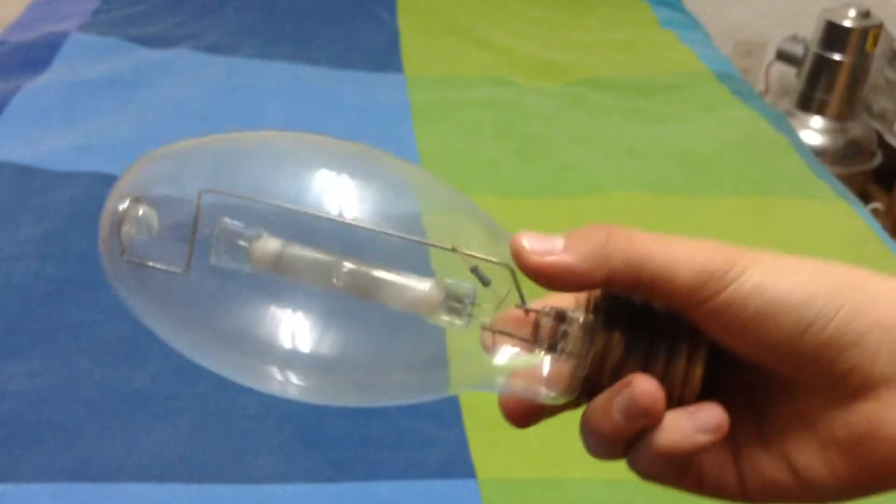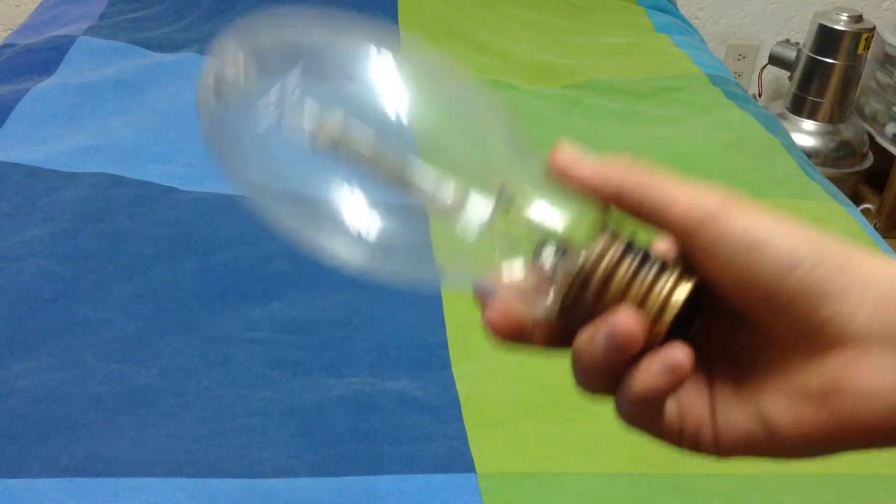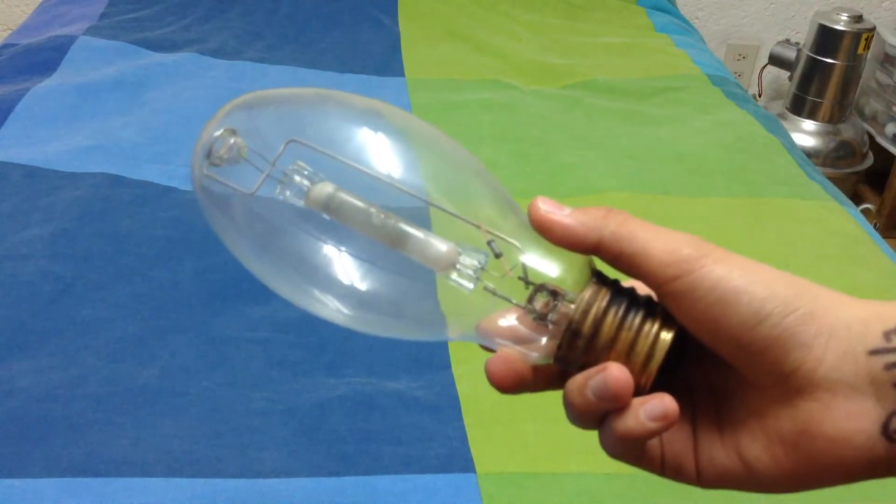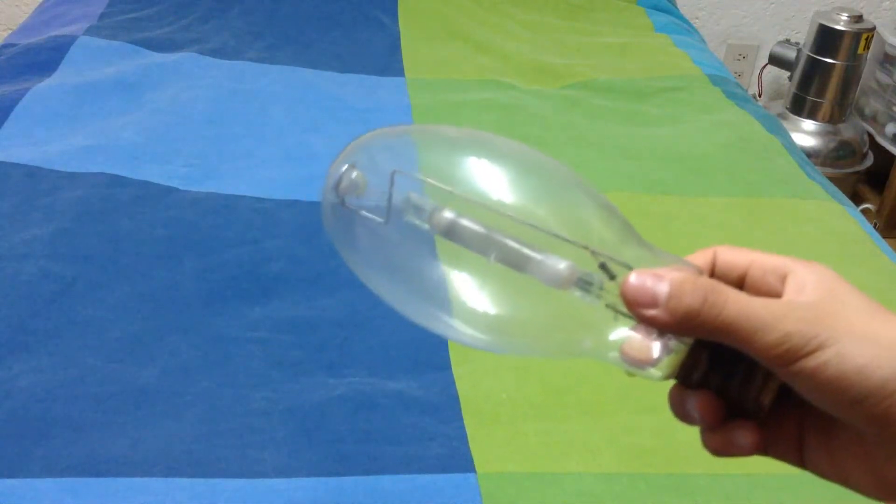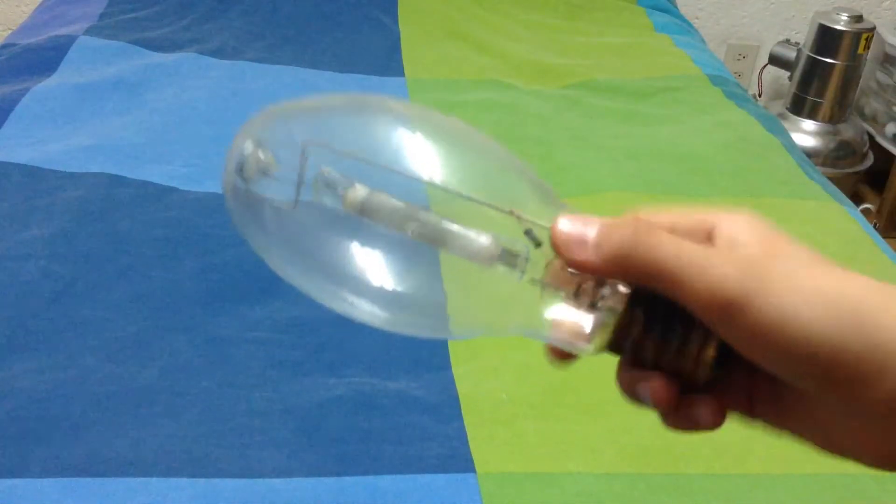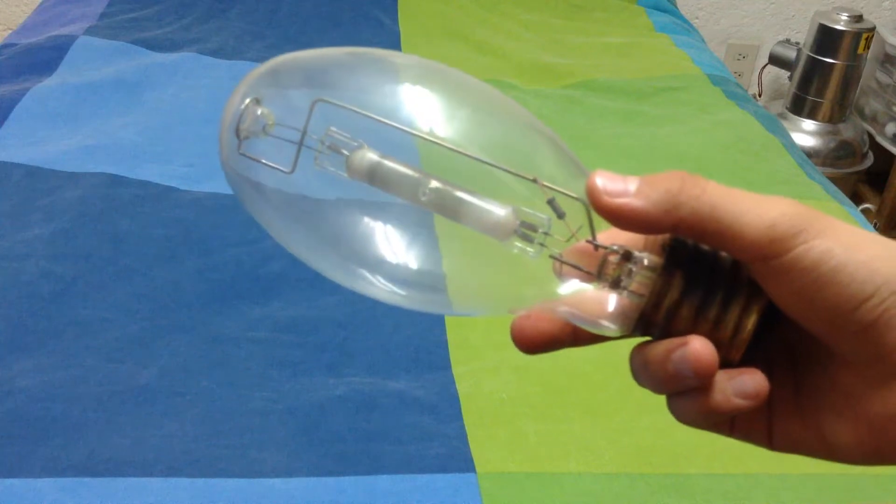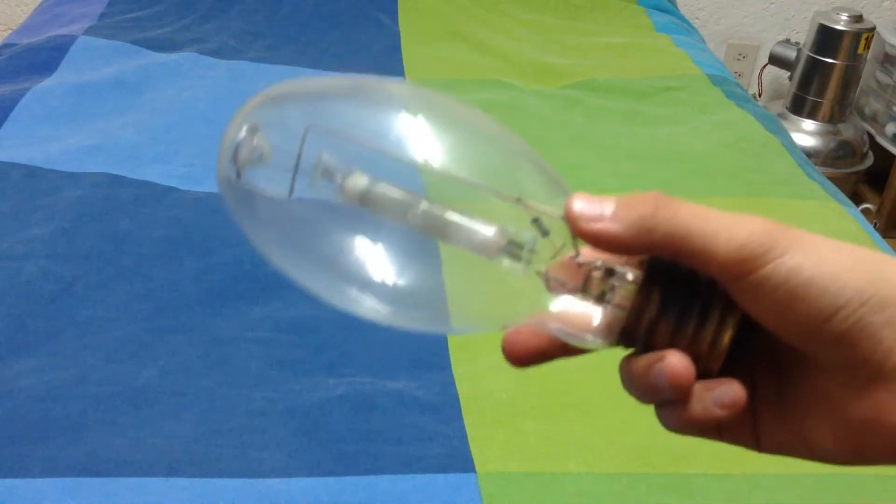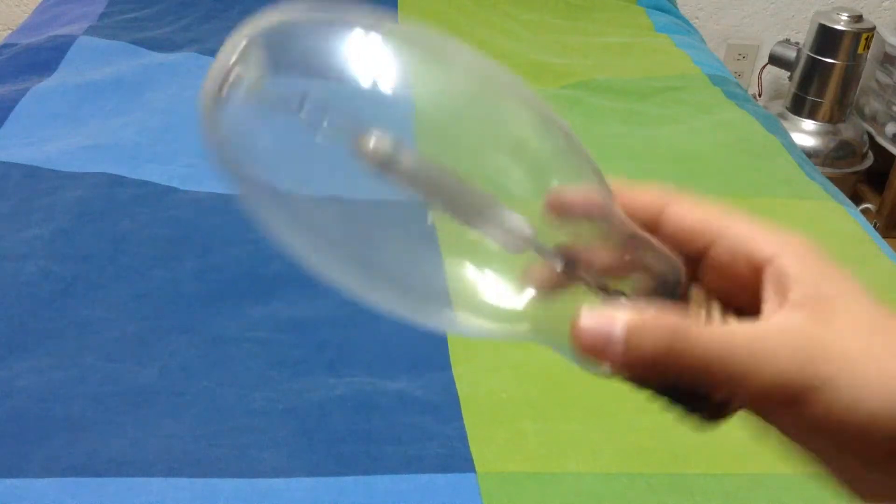This bulb is obviously used, as you can see. I got it near my home at an abandoned parking lot. There was a fixture and the bulb was at reach, so I went to my home to get some stairs and grab the bulb and take it home. Obviously, I didn't steal it from anybody, because the fixture was abandoned.